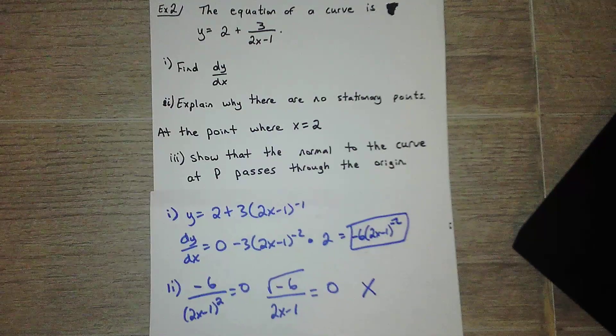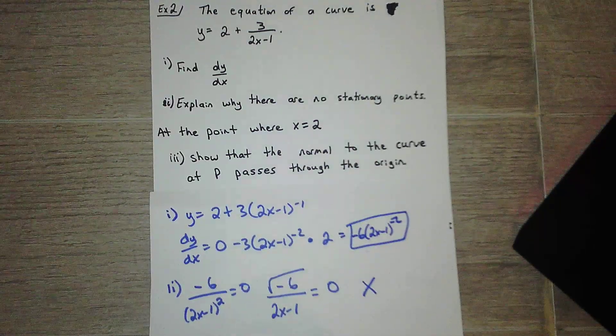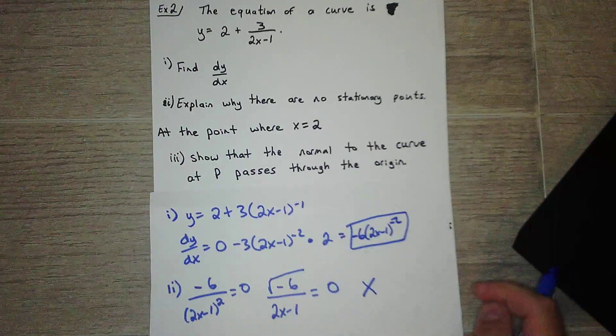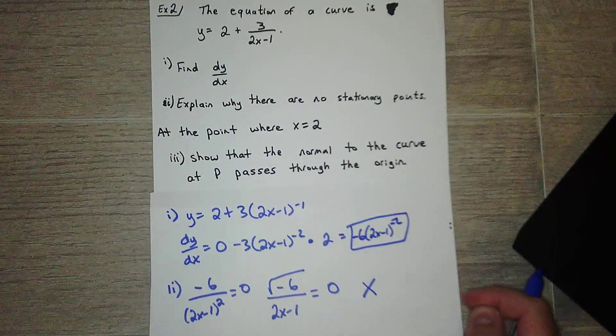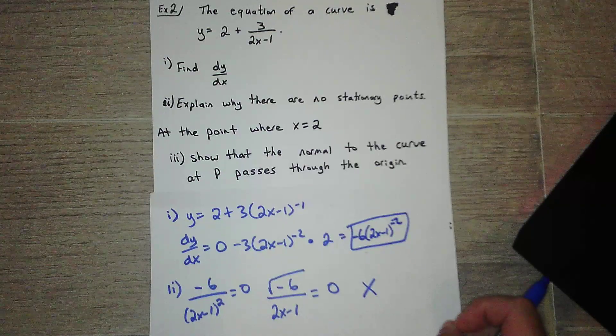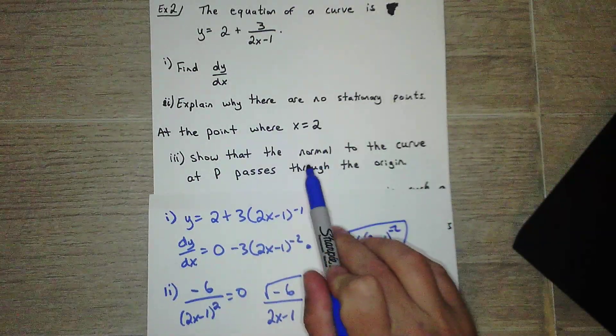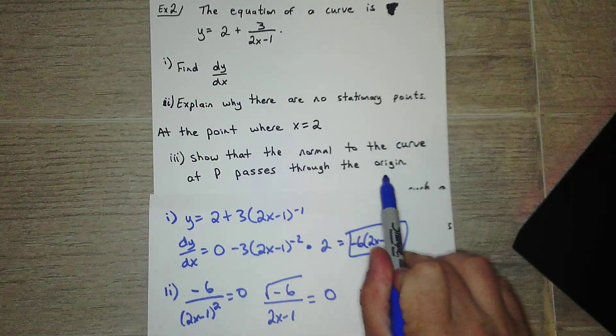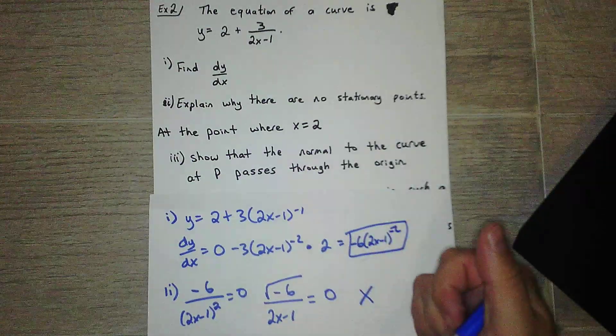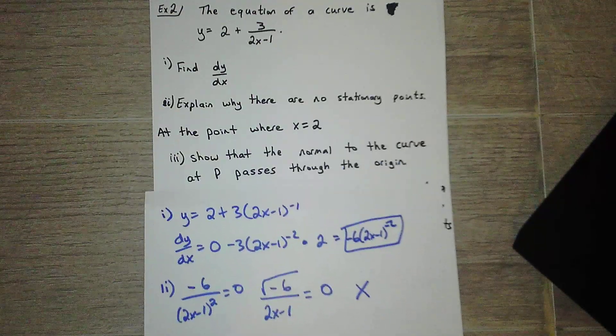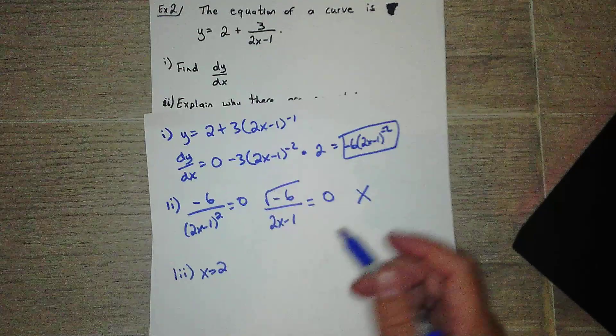Okay, triple i: At the point where x equals 2, show that the normal to the curve at P passes through the origin. So basically, we just want to find an equation of the line for the normal, and then the origin should be a solution for that equation. So zero, zero. First we need to find the equation of the normal. Remember how to find the equation of the normal.